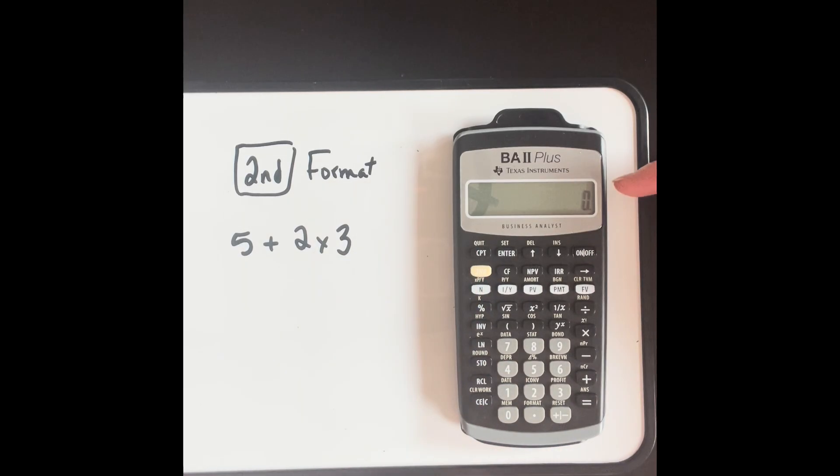So now I've set it so it has a floating decimal point, I kept it on the US date, I kept it on US number separators, I kept it on degrees, but I changed it to AOS, which I would advise you to do for the types of calculations that you're going to carry out.